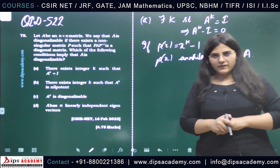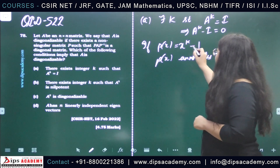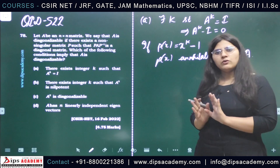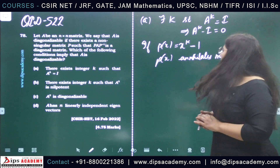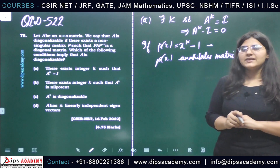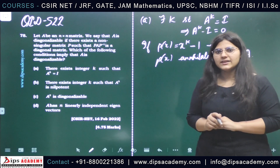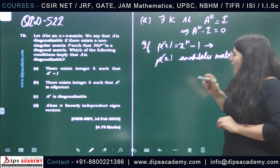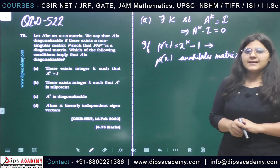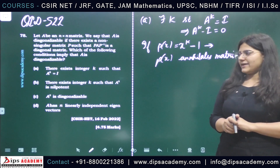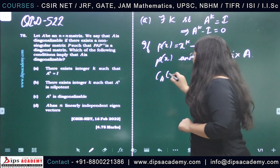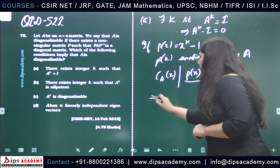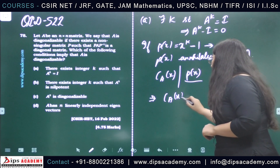That means the characteristic polynomial of A will divide p(x). Since no field is explicitly mentioned, we work in the complex field. In complex numbers, the polynomial p(x) = x^k − 1 has exactly k linearly independent linear factors. So p(x) can be written as a product of k linear factors, which means the characteristic polynomial c(x) divides p(x) and is also a product of linear factors.